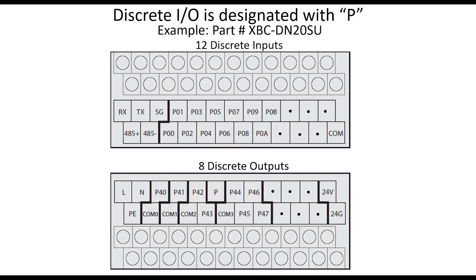Shown is an example of the terminal block layout of an XGB PLC as provided in the PLC documentation. This PLC has 12 discrete inputs and 8 discrete outputs.